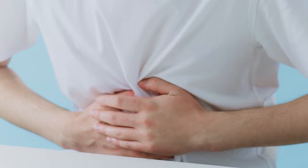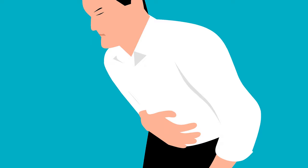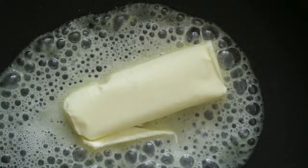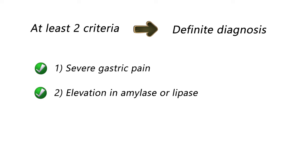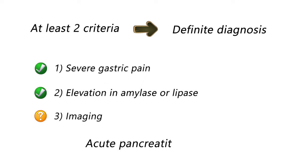Abdominal pain especially in the epigastric area is the cardinal symptom of acute pancreatitis, which usually radiates to the back. The pain often relieves by bending forward or sitting up. Fatty foods or heavy meals exacerbate the pain, and the patient may experience nausea or vomiting after meals. Presence of at least 2 of the following criteria is required for definite diagnosis: severe epigastric pain, elevation in serum lipase or amylase level 3 times greater than the upper limit, and characteristic findings on imaging. The patient meets the first two criteria, so acute pancreatitis is definitively diagnosed.